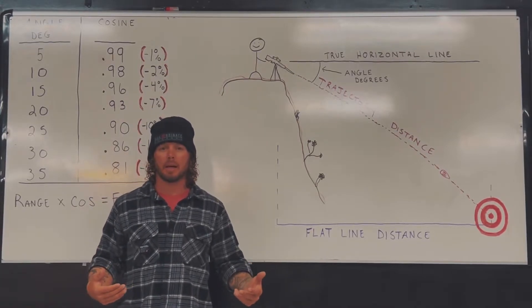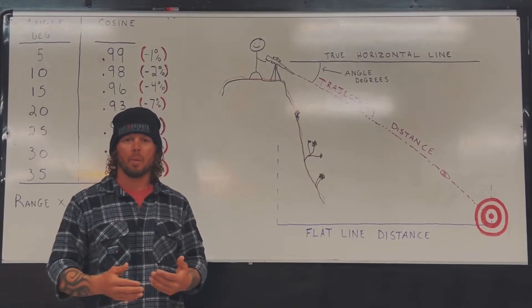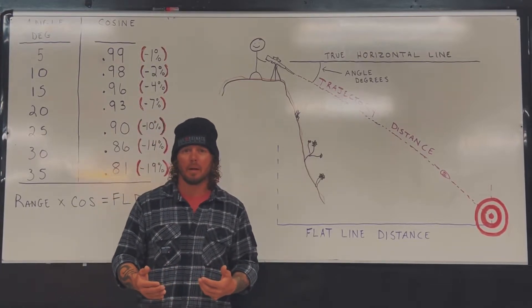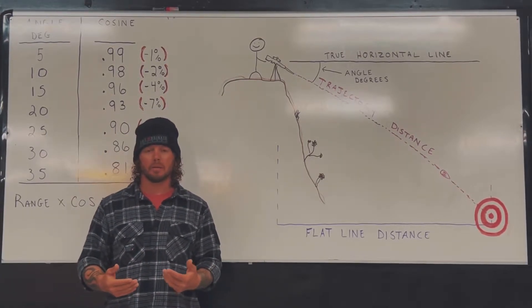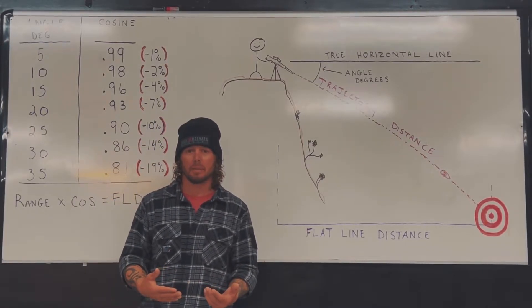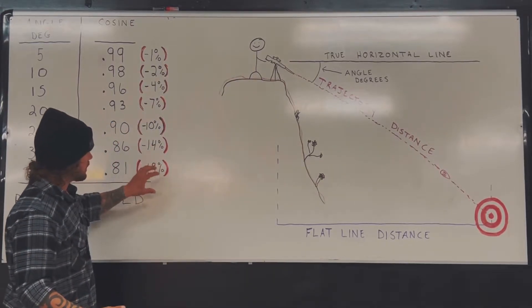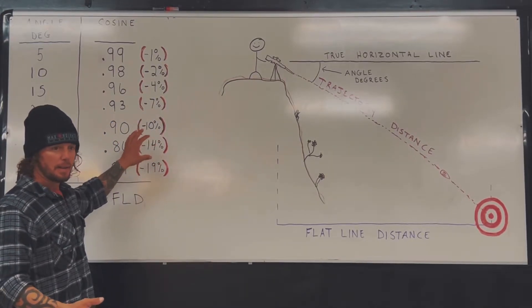So what's 1%? You have 1% margin of error at 400 yards - it's only 4 yards. You're still making that shot, point of aim, point of impact. So you'll be okay fudging these numbers that make the math a little bit easier for you.